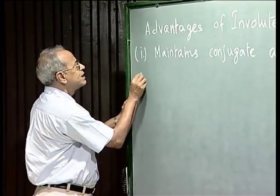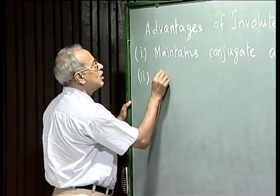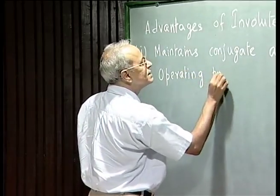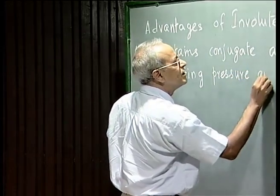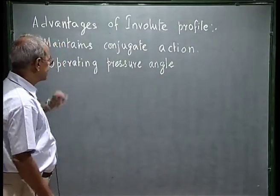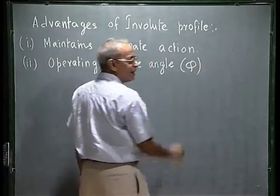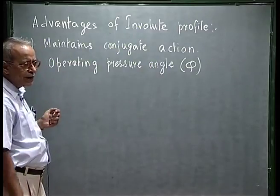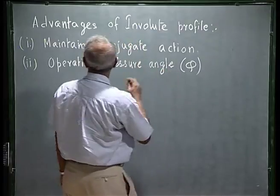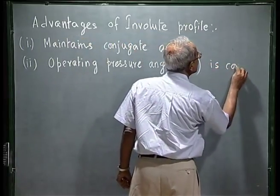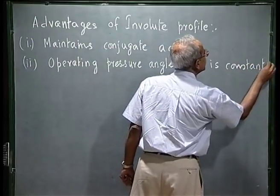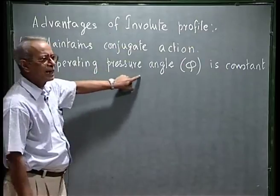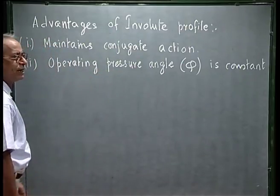The second advantage is that the operating pressure angle is constant. If you remember in our last lecture, we denoted this operating pressure angle by the symbol phi, which is the angle between the line of action and the common tangent to the pitch circles. The operating pressure angle remains constant.